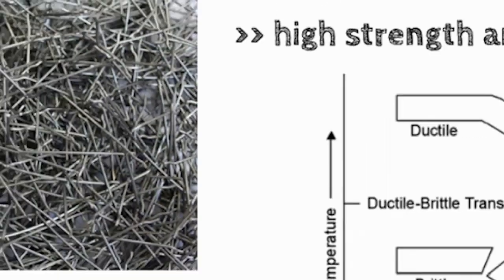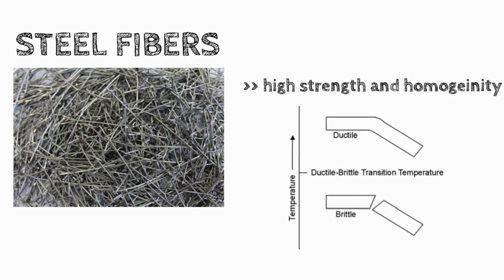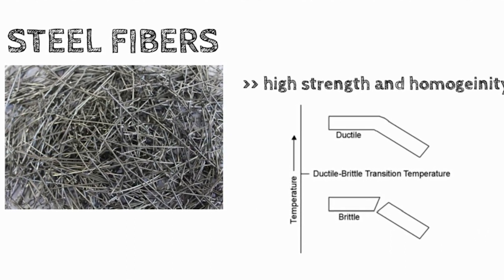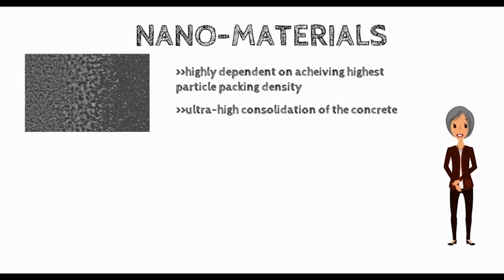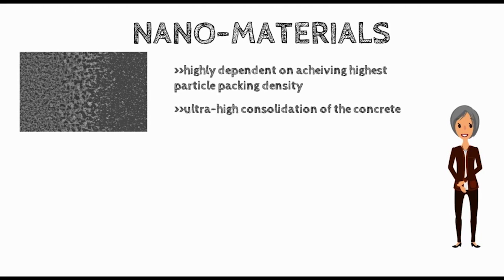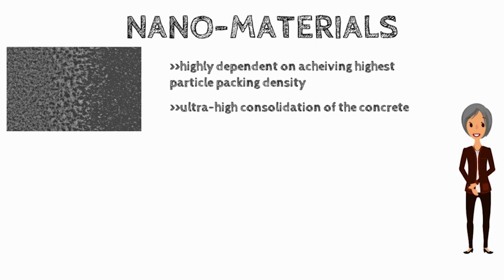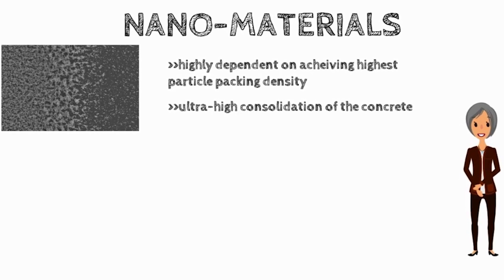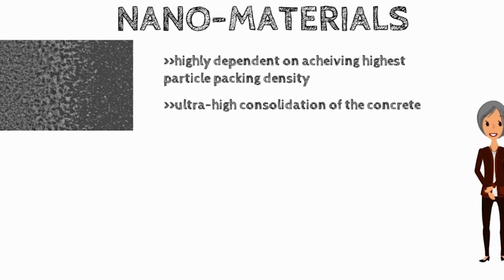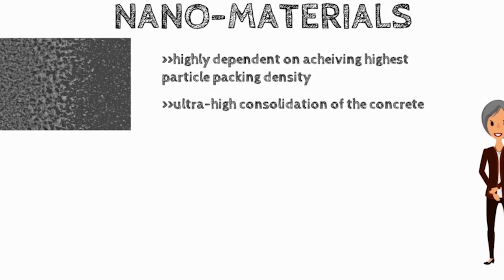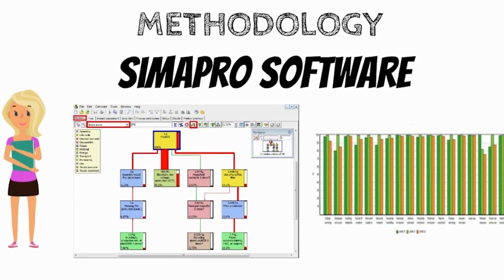Steel fibers. Due to its very high strength and homogeneity, UHPC is very brittle, yet it can be made ductile by adding steel fibers. Nanomaterials. The success of mixture design of UHPC is highly dependent on achieving the highest particle packing density and ultra-high consolidation of the concrete. Nanomaterials can fill the gaps between micro-sized cementitious materials and fine aggregates, leading to reduced porosity and higher particle packing density.